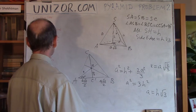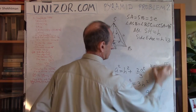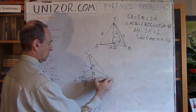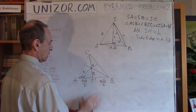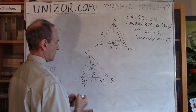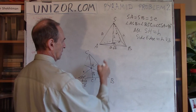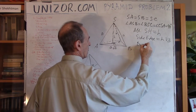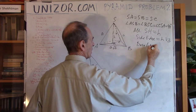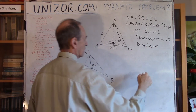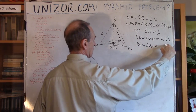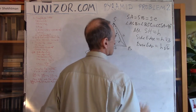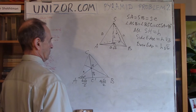Next are the base edges of this triangle. We know that the base triangle has a side equal to A√2. So the base edge equals A√2 = H√3 · √2 = H√6.